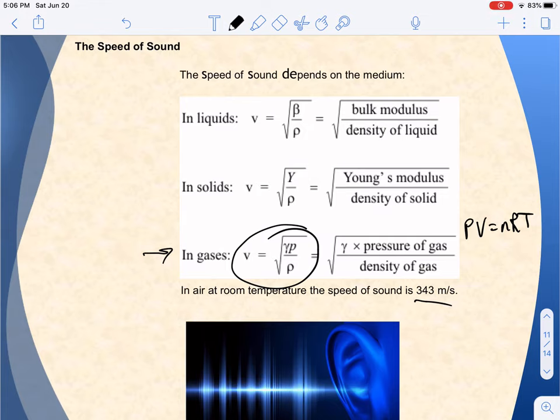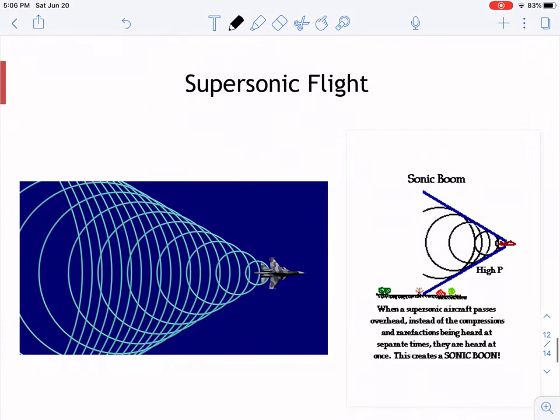Regardless, there is a finite speed of sound that we can actually, unlike light, exceed. And so if you have some sort of high-speed jet, for example, you can have what we would call supersonic flight.